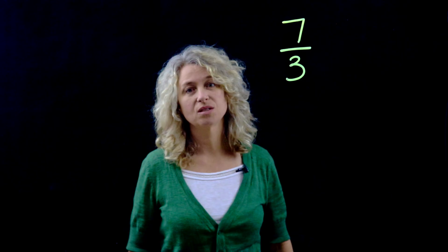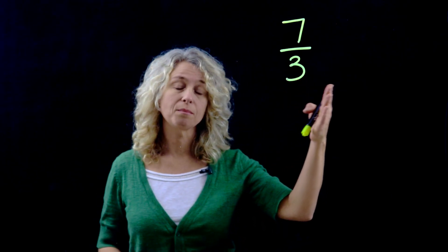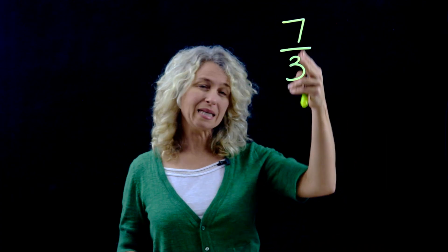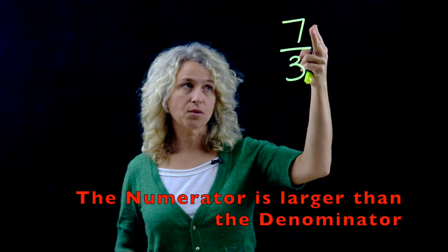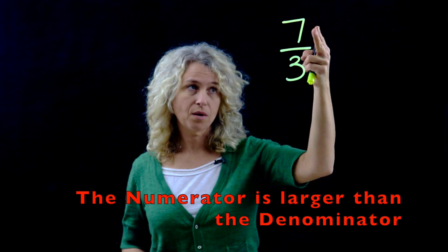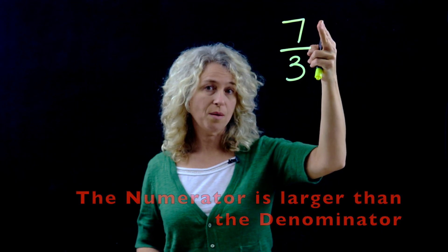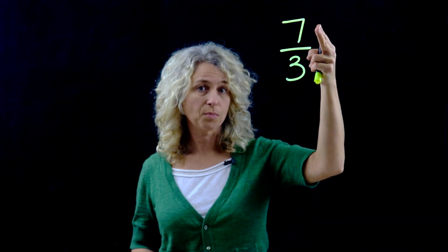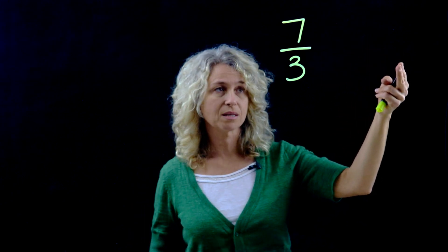Hi, so in this video today we're going to learn how to change an improper fraction to a mixed number. What makes this an improper fraction? Take a look. So the numerator is the larger number, seven-thirds. Anytime you have the larger number on top, it is improper. Let's see about changing this back to a mixed number now.